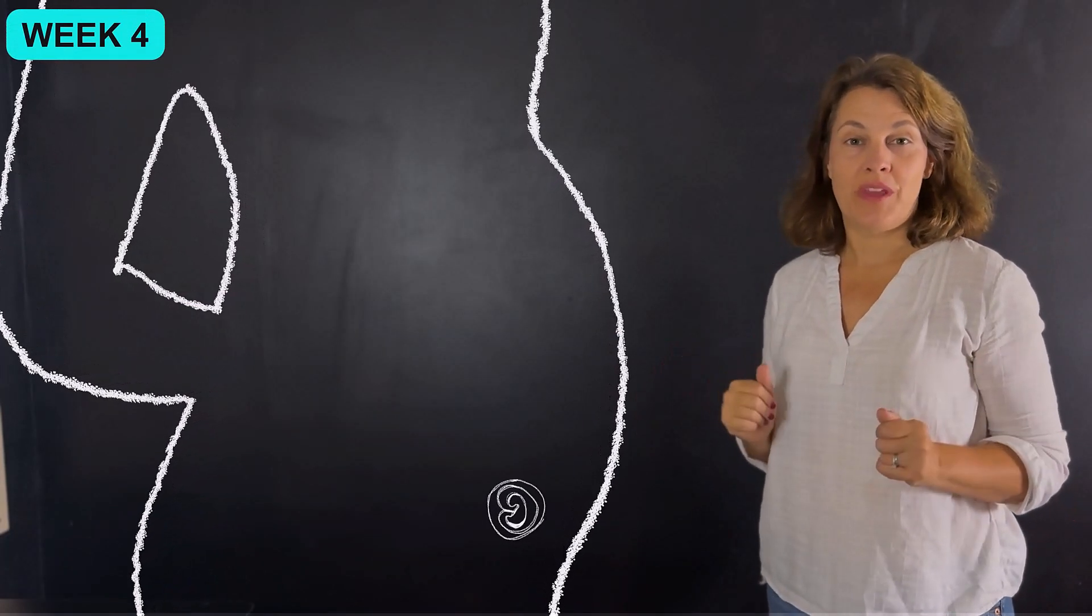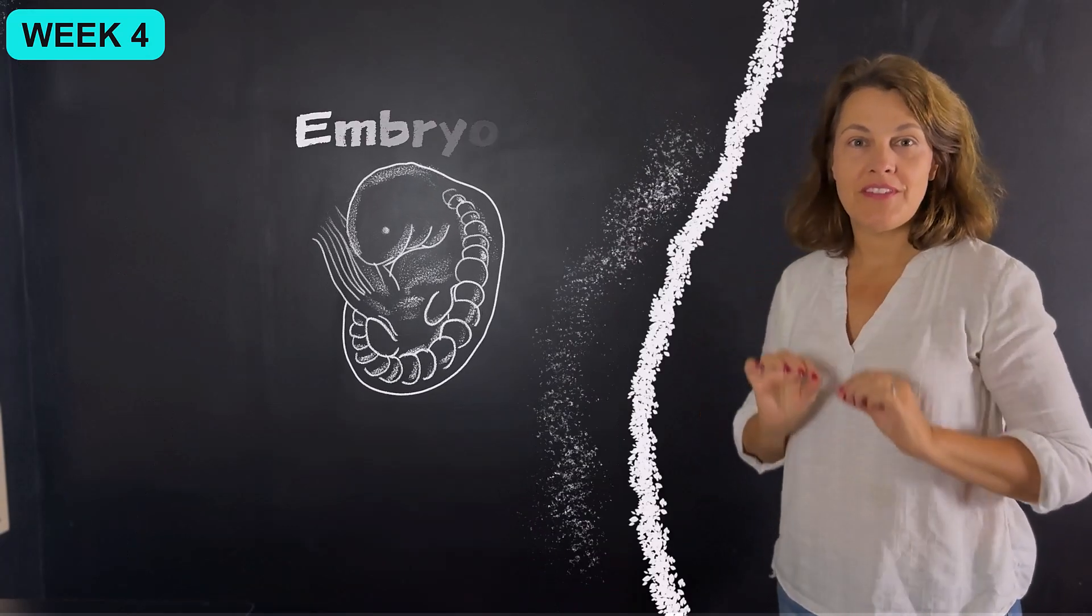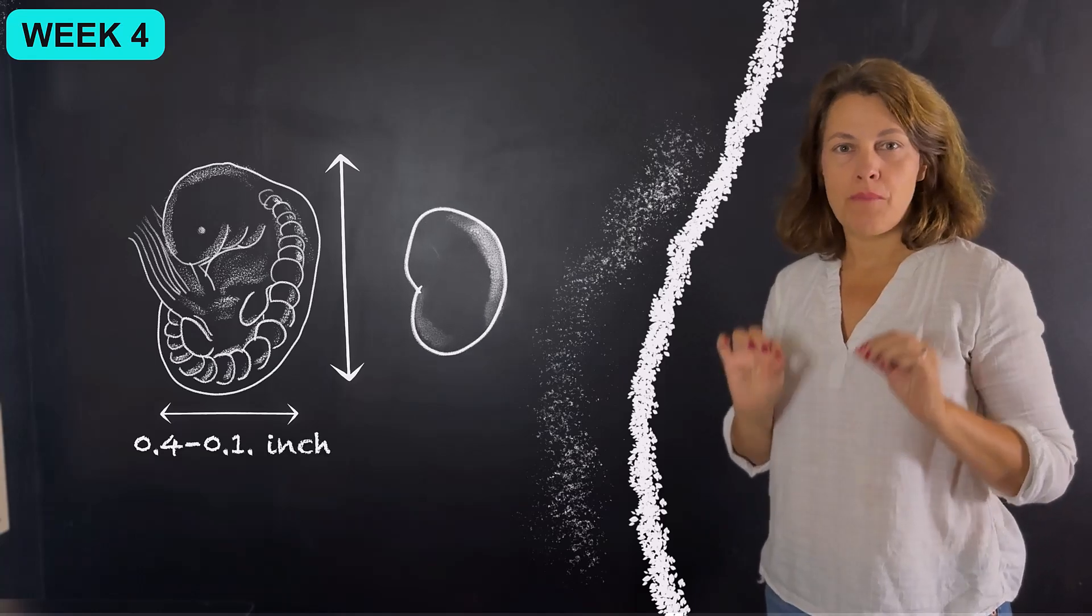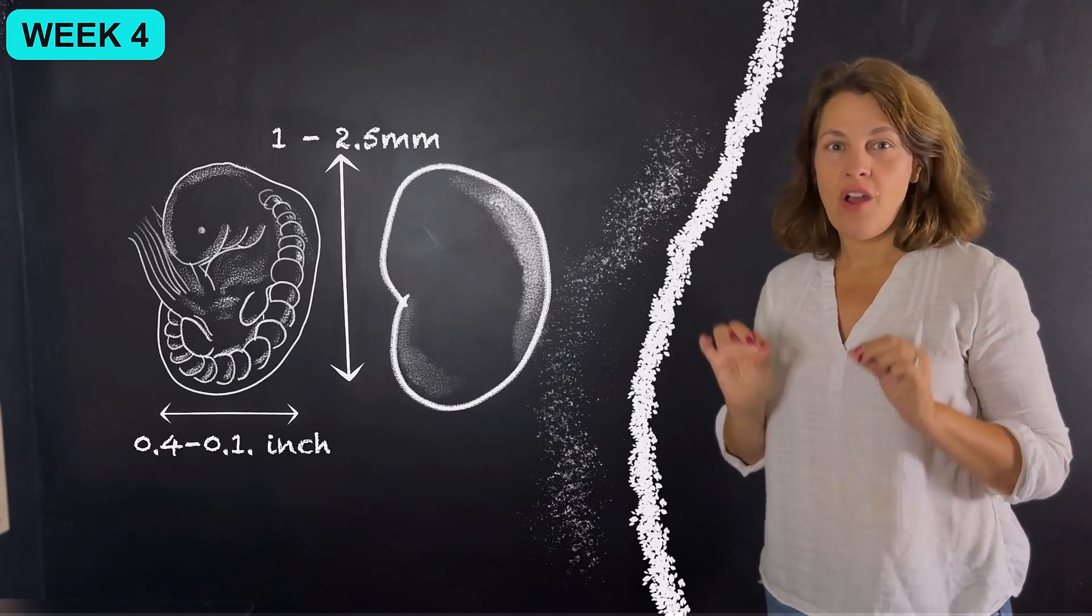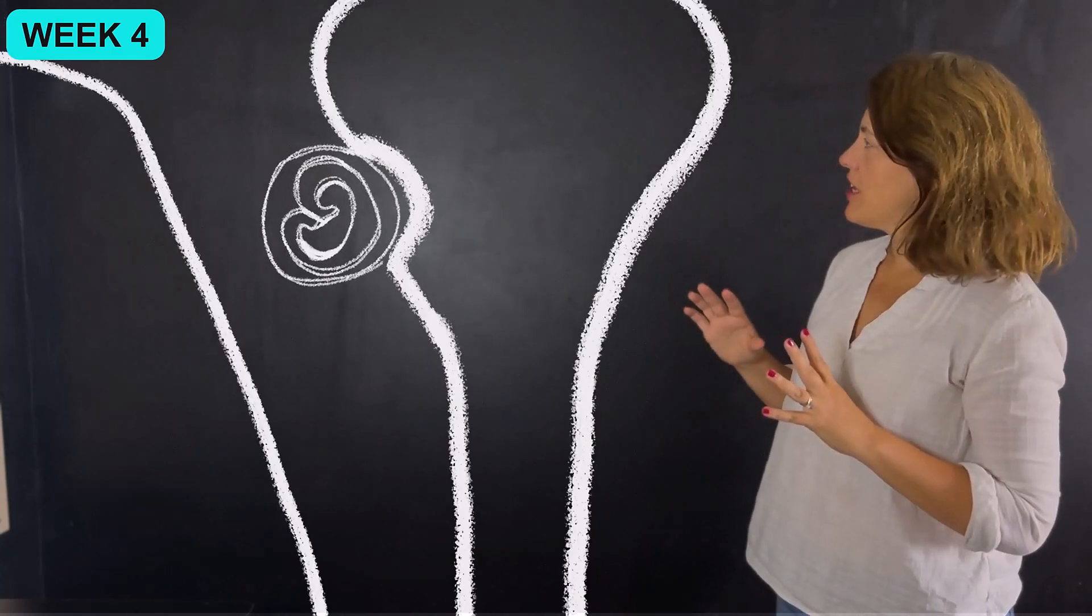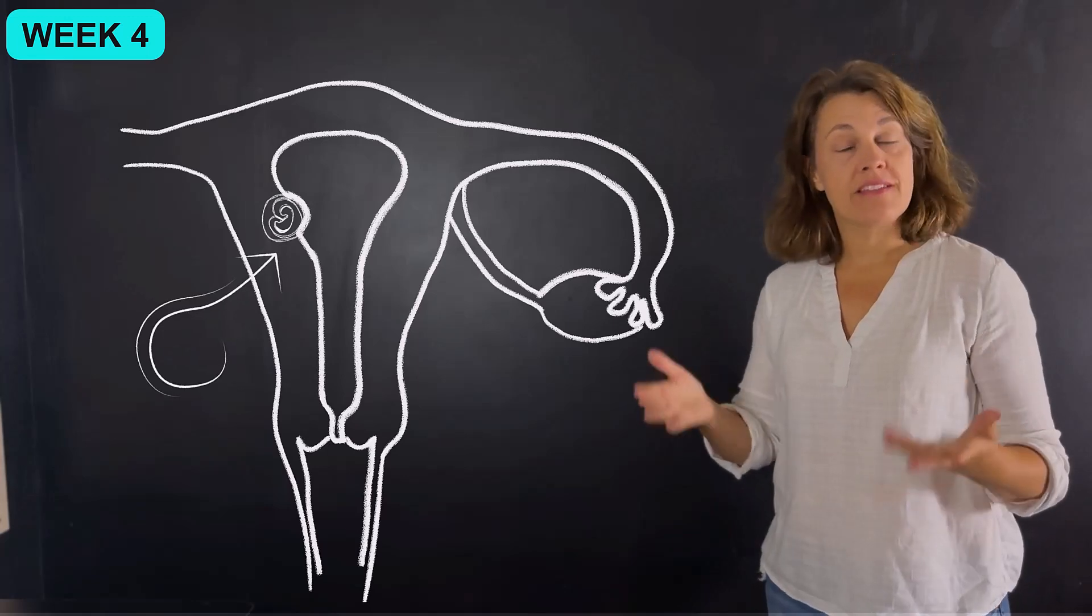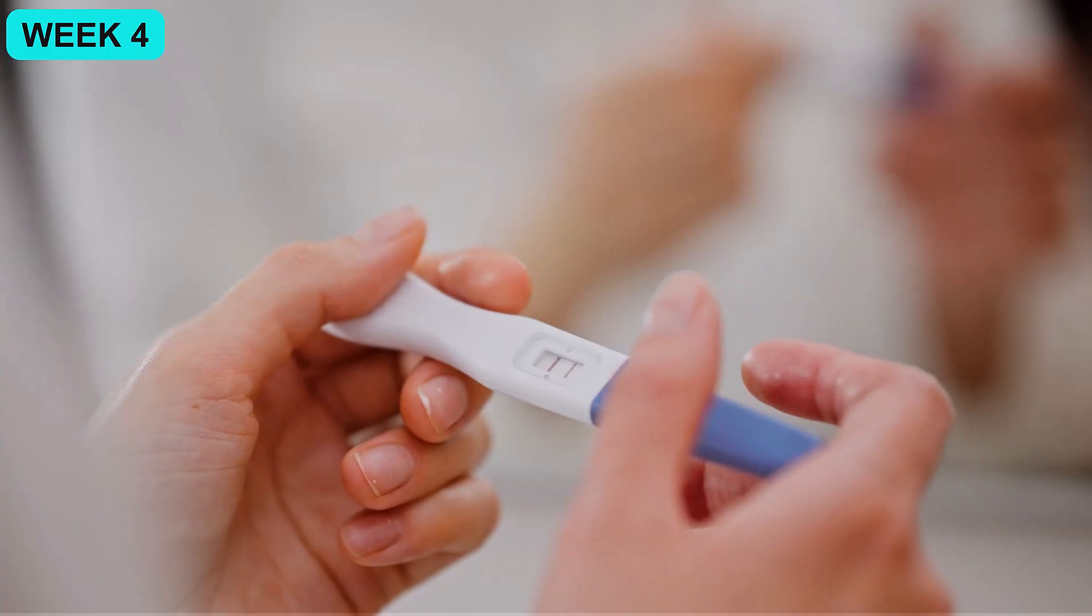What's happening with baby development this week? The baby, which is called an embryo at this point, is just about the size of a poppy seed, measuring only 0.04 to 0.1 inches, 1 to 2.5 millimeters in length. It has just finished implanting into the wall of the uterus. Now this is a critical step because after this step, pregnancy is established.